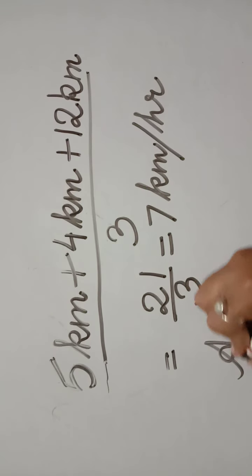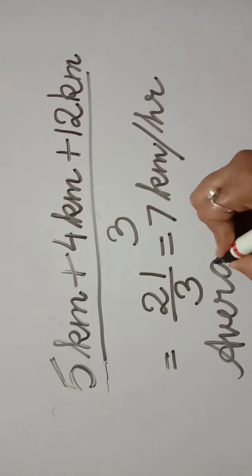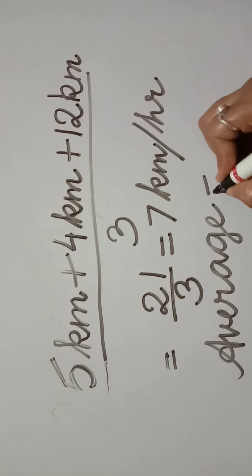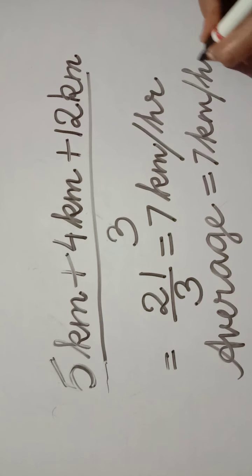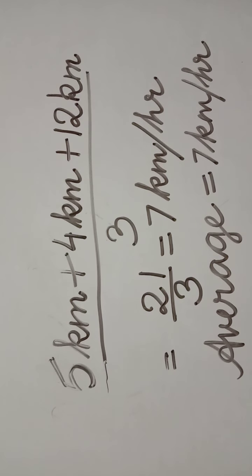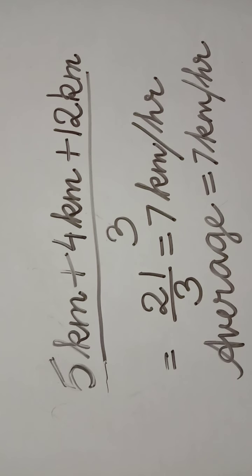So the average is 7 km per hour. This is how we can find the average by adding the given data and dividing the sum by the number of data. Let us take some more examples.